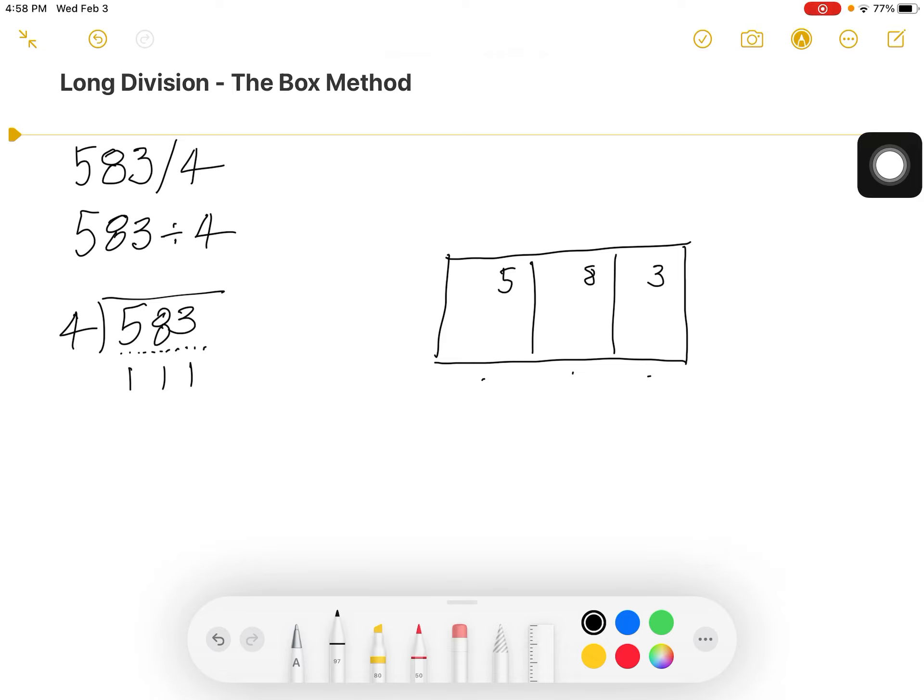The divisor is the same. It starts outside our box, outside the bracket with the 4. So now as we look at this problem, we have 583 divided by 4.